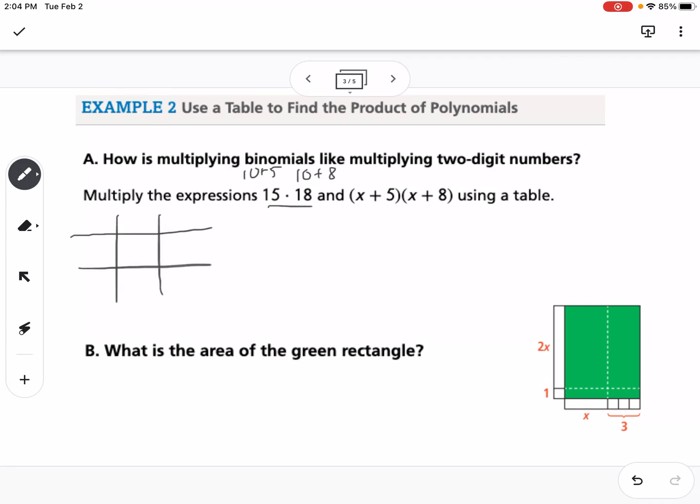I'm going to put my 10 plus 5 right here, and my 10 plus 8 right here. For each of these boxes, I'm just going to do the multiplication. So 10 times 10 is 100, 10 times 8 is 80, 10 times 5 is 50, and 5 times 8 is 40. Now all I have to do is take 100 plus 80 plus 50 plus 40. That's going to give me 270.